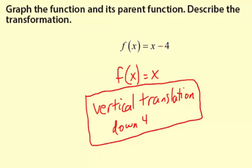And if you look here at this minus 4, you're subtracting 4 from the output of the parent function. So x minus 4 means you're taking 4 away from the outputs or translating 4 down.